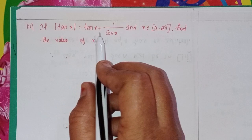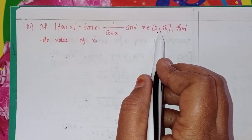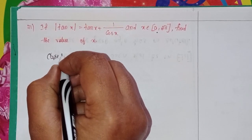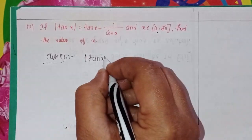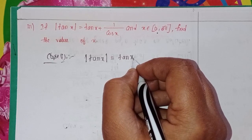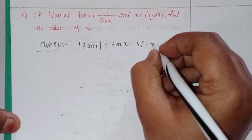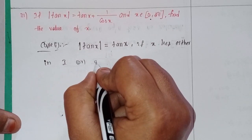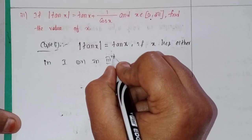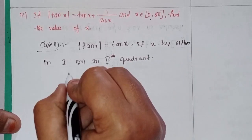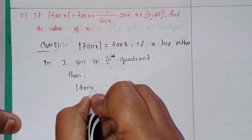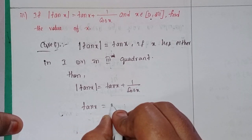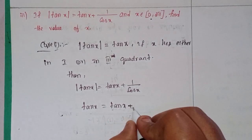Third problem: if the modulus of tan x equals tan x plus 1 divided by cos x, and x belongs to the interval [0, 2π], find the value of x. Case 1: if x lies in the first or third quadrant, then modulus of tan x equals tan x, so tan x equals tan x plus secant x. The tan x cancels, leaving secant x equal to 0, which is impossible.